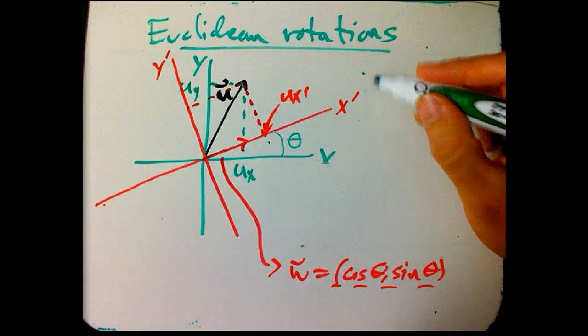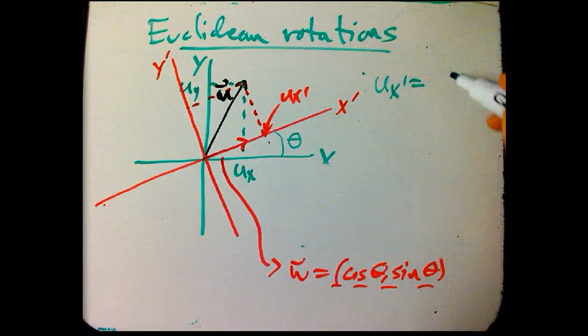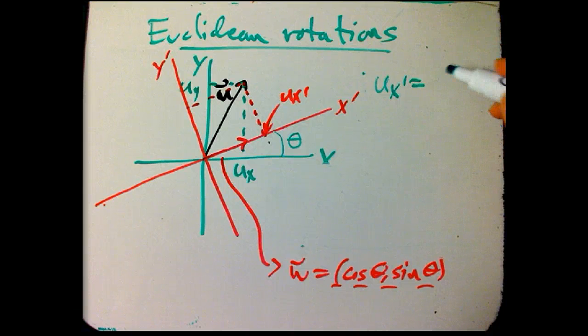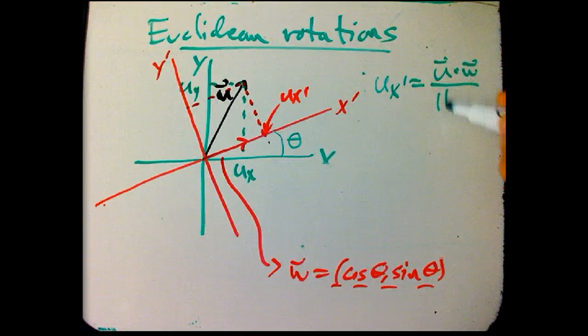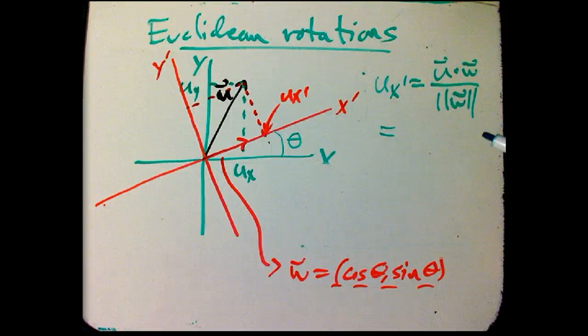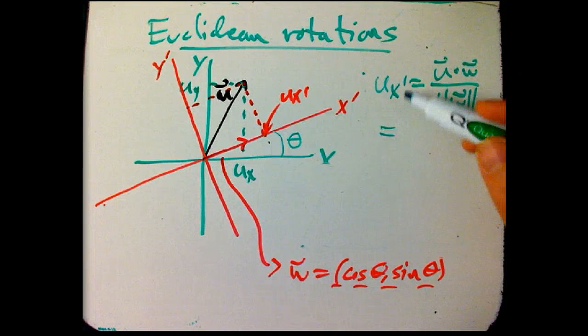And we have a formula for that. The scalar projection is just the dot product, well, let's use the ordinary Euclidean formula for that product here, U dot W over magnitude of W. That's exactly what that's designed to do.